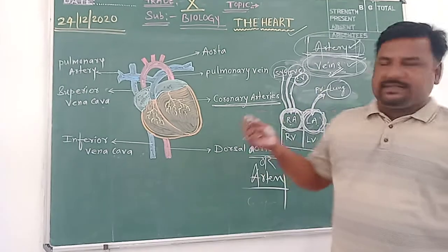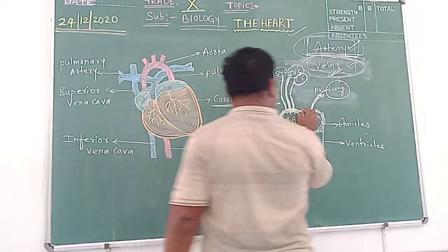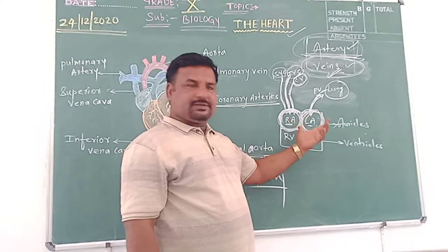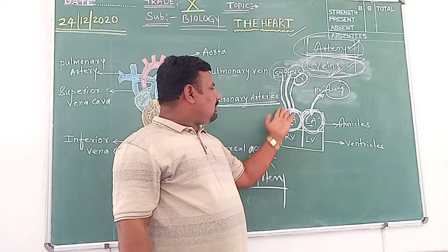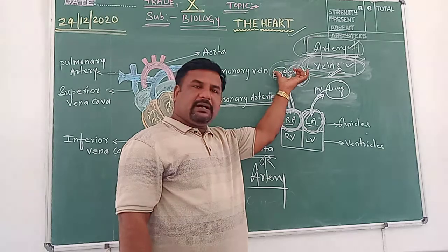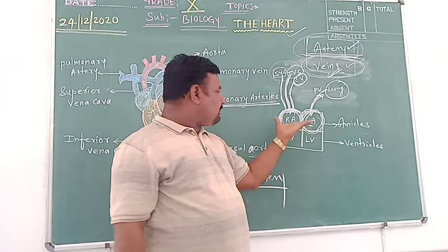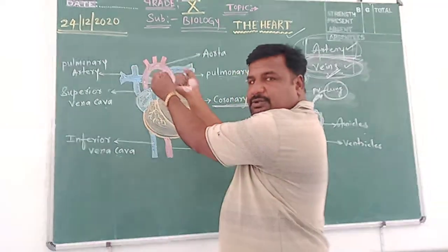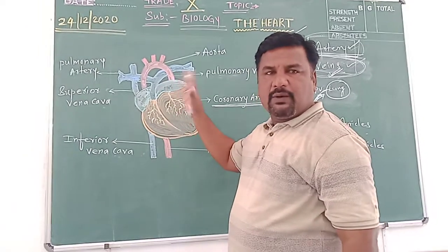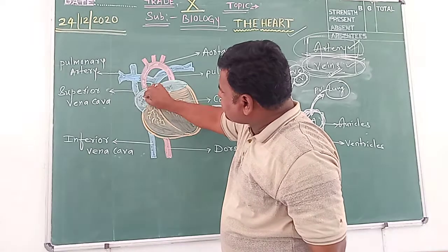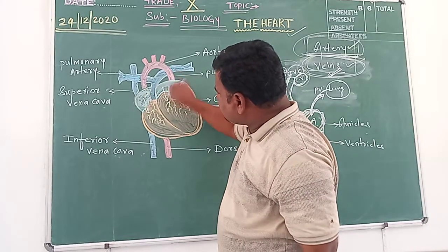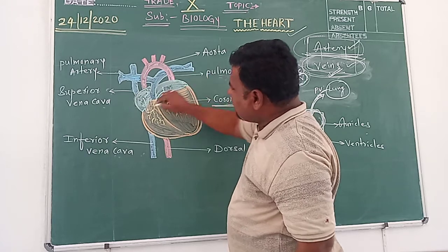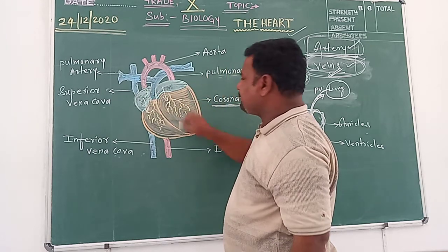This side has deoxygenated blood and this side has oxygenated blood. Blood from various body parts comes here. When both auricles contract, due to the contraction made by these two auricles, the deoxygenated blood present in the right side and oxygenated blood present in the left side is pumped down into the ventricles.